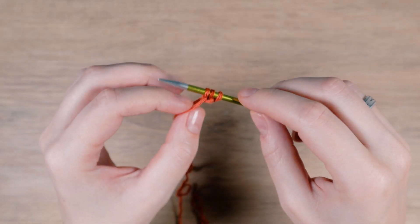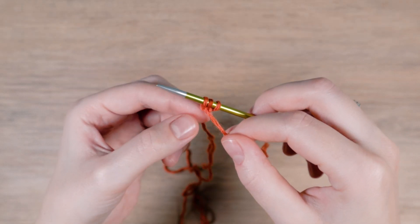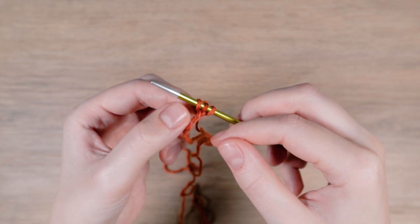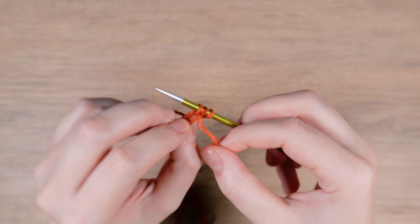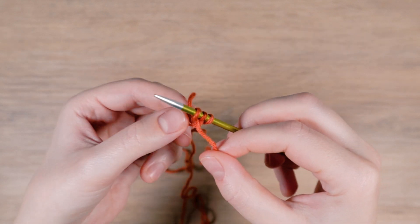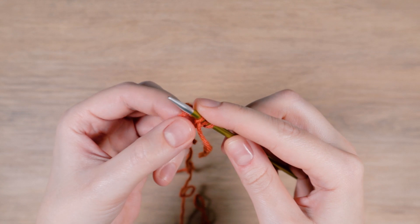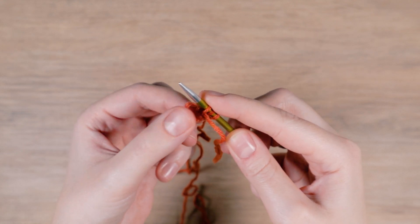Before you continue, pull on the last stitch of the cast on edge to make the stitch bigger. We will be using that stitch later and this will make it easier to identify the stitch. You can also put a stitch marker in it, but I find this easier.